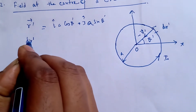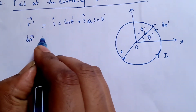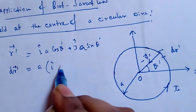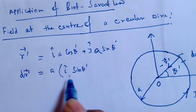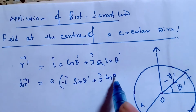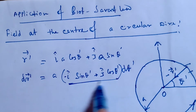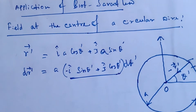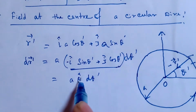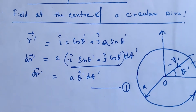We also require dr'. Differentiating the equation for r', we get: dr' = A·(−î·sin θ' + ĵ·cos θ')·dθ'. This portion — î·sin θ' + ĵ·cos θ' — is nothing but θ̂' (the theta-hat unit vector).